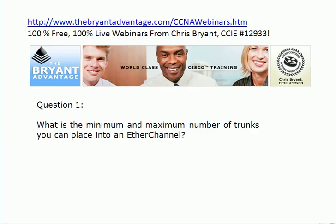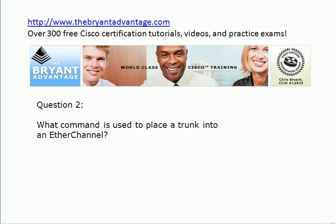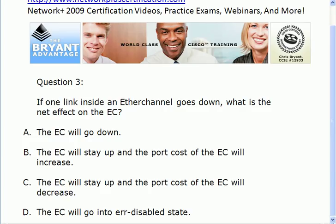Now let's get to the questions. Question one: what is the minimum and maximum number of trunks you can place into an EtherChannel? There is a minimum and a maximum. Question two: what command do you use to place a trunk into an EtherChannel? Because the odd thing about EtherChannels on the switches is that you don't actually type the word EtherChannel very often. For question three, if one link inside an EtherChannel goes down, what is the net effect?